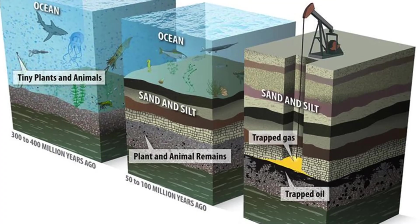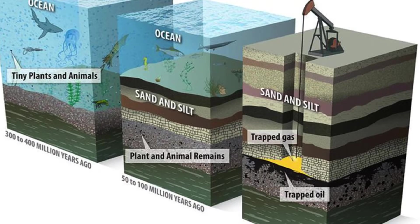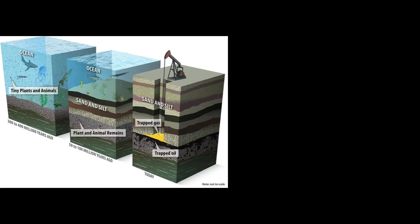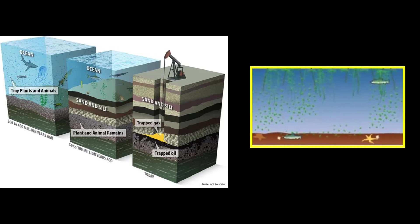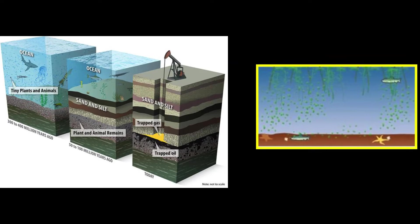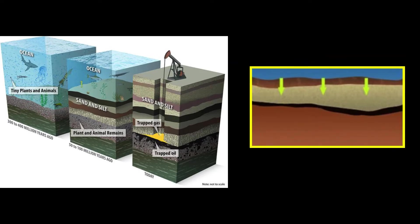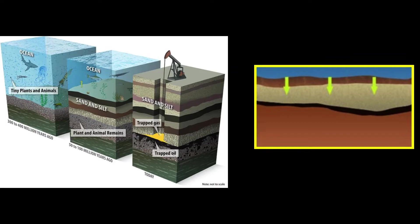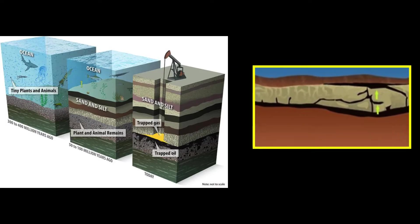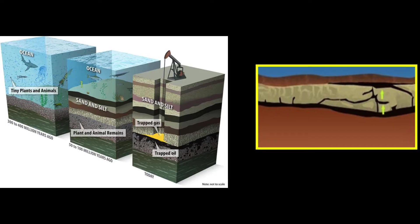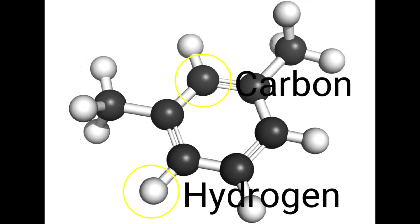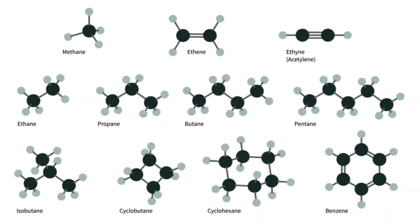Oil and gas are actually formed from the remains of ancient plants and animals that lived millions of years ago. When these organisms died, they sank to the bottom of oceans or lakes, where they were buried by layers of mud and silt. Over time, these layers became thicker and heavier, creating high pressure and temperature conditions that transformed the organic matter into hydrocarbons.